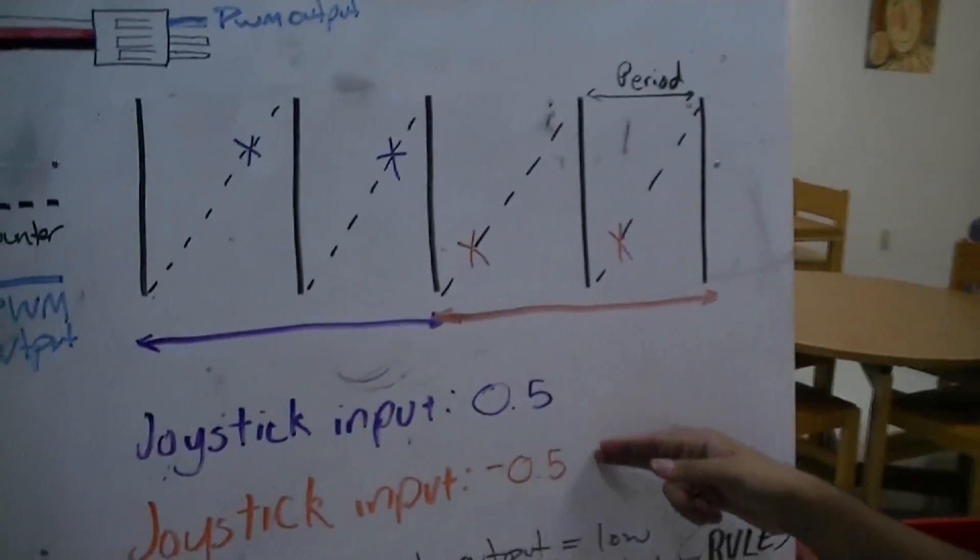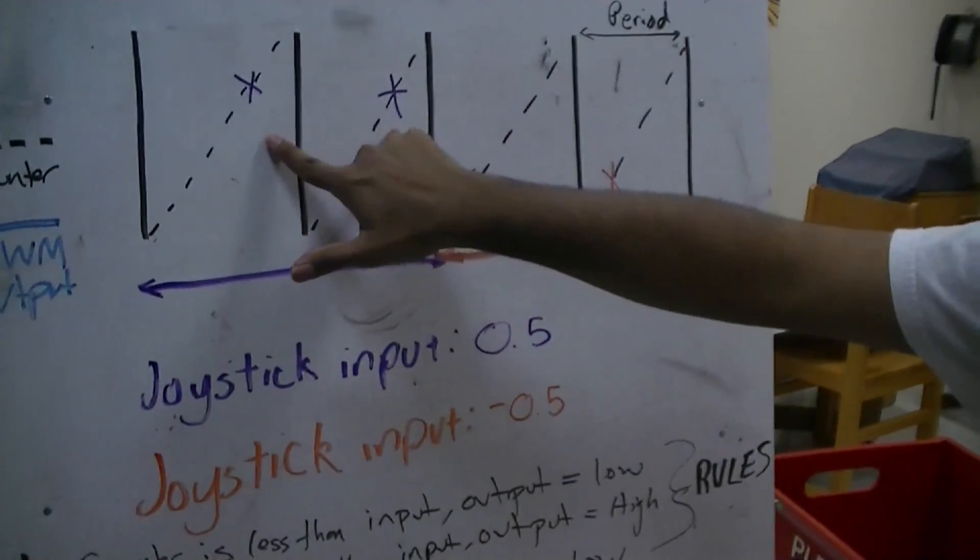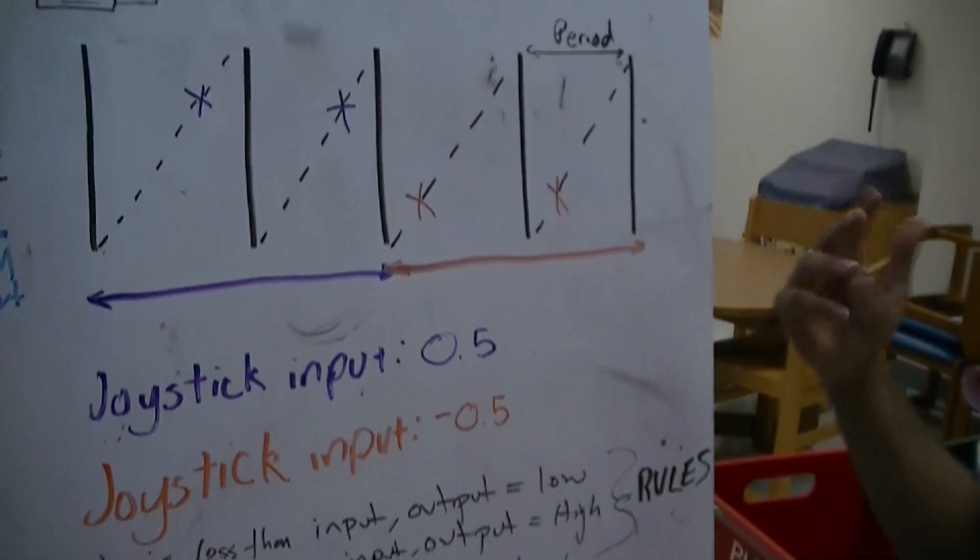So you can see that we put a couple of inputs. So these two periods, our time intervals, have a specific input, and then these two ones have a specific input.